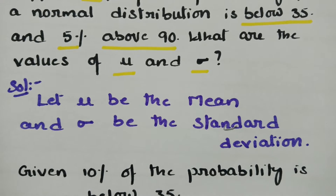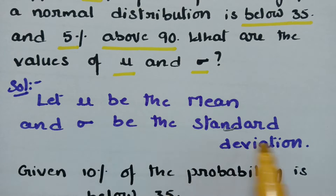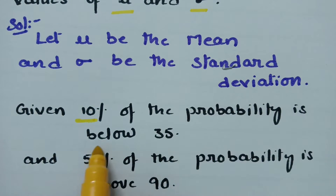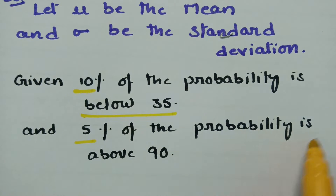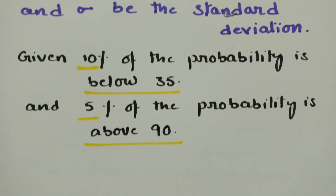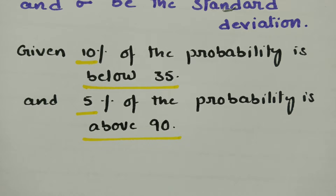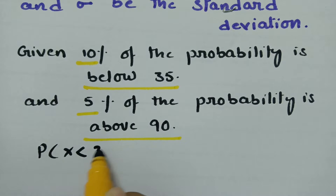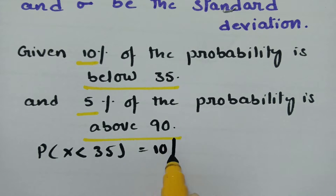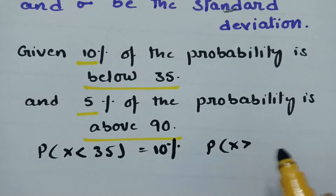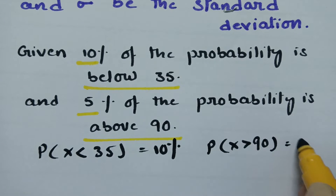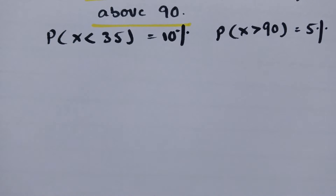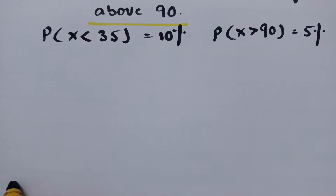In the solution, what is given? We consider that mu is the mean and sigma is the standard deviation. 10% of the probability is below 35 and 5% of the probability is above 90. If it's below 35, that is the probability of x less than 35 equals 10%, and the probability of x greater than 90 is 5%. I am going to draw the normal curve.